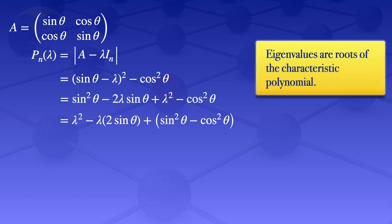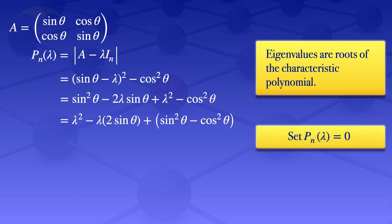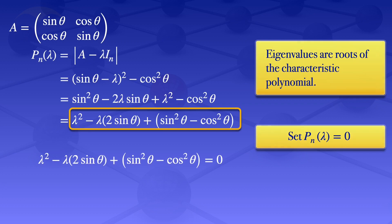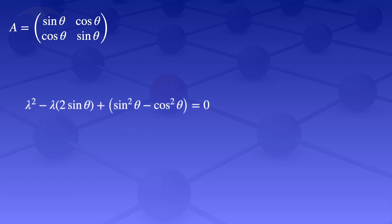To get the eigenvalues, we said they are the roots of the characteristic polynomial. To find the roots, we set the polynomial equal to zero and solve for λ. So setting P_n(λ) = 0, we have λ² − 2 sin θ · λ + sin²θ − cos²θ = 0. This is a quadratic equation in λ.